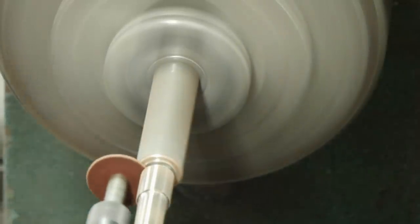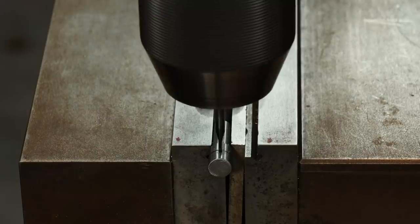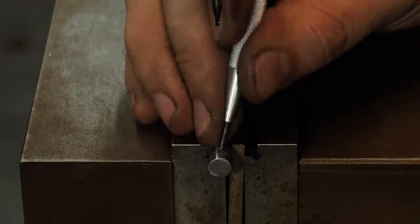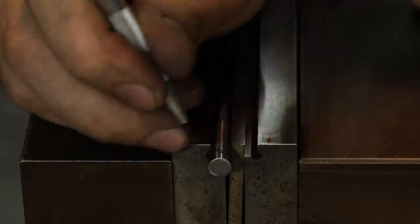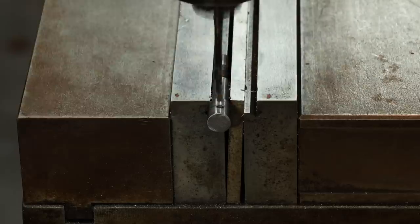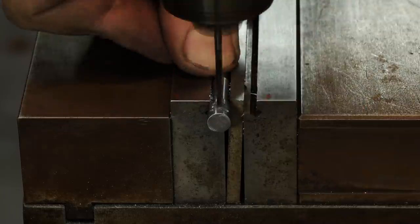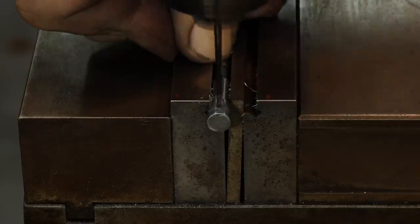The pommel nut's been threaded. The next thing we need to do is mill a hole in the top of the pommel nut. That'll allow me to stick a 3/32 inch drill bit through the hole to be able to tighten and loosen the pommel nut onto the knife.